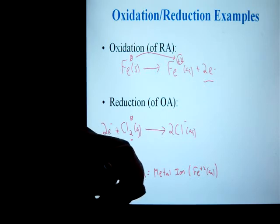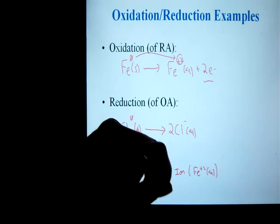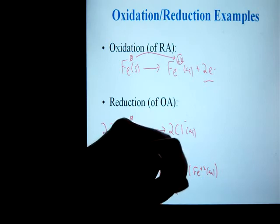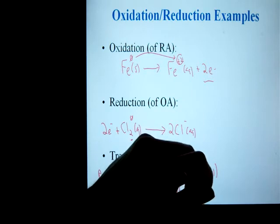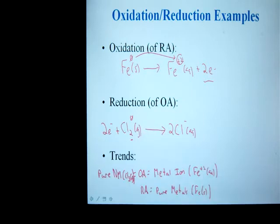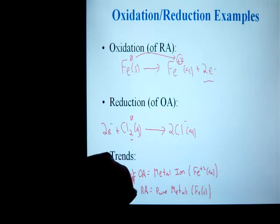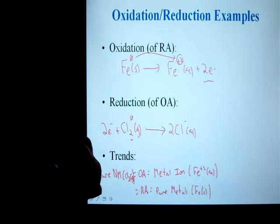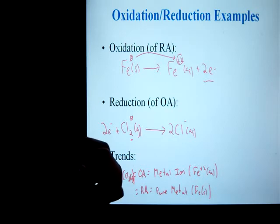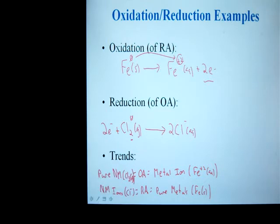For reducing agents, pure metals such as iron. Pure metals will always be reducing agents. You're not going to see any exceptions there. And then nonmetal ions, like chloride, would be a reducing agent.